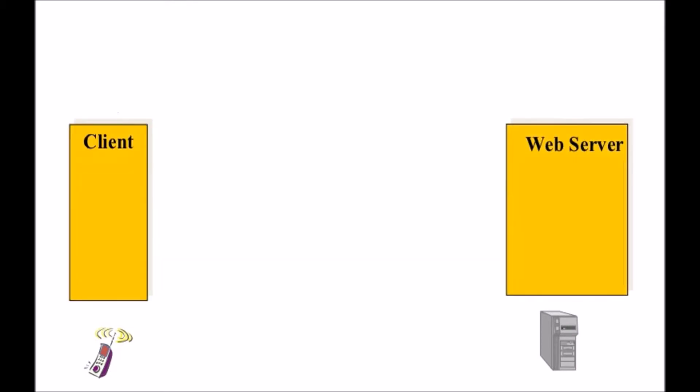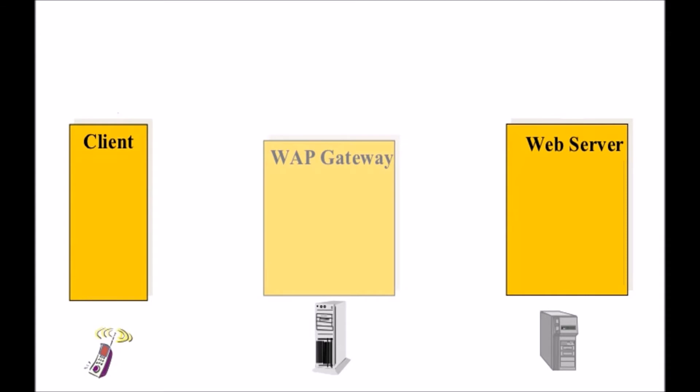Let us suppose we are having a mobile and a server. The mobile is acting like a client and the server is acting like a web server which provides internet connectivity to the mobile. If we are using a PC instead of mobile in this diagram, then we don't need WAP, but as we are using a mobile phone, we need a WAP gateway. WAP provides internet connectivity from the web server to the mobile phone.